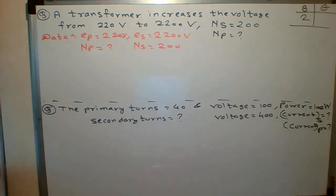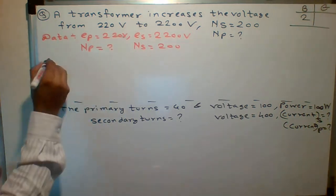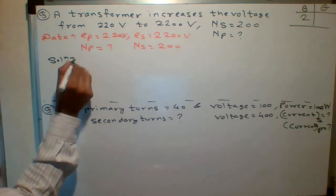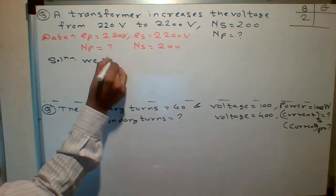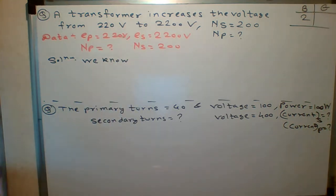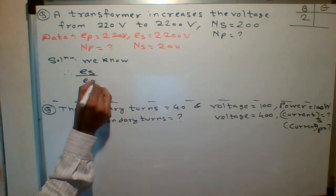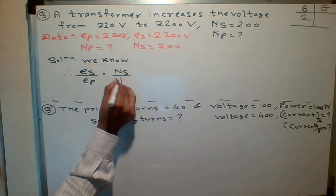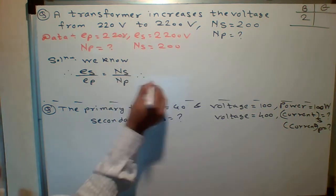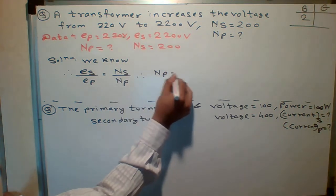Students, that we know the formula. Who will tell me the formula of relation between? We know the relation between primary turn, number of turns and voltages. Who will give us the formula? ES upon EP, will give us what? NS upon NP, if you know. So I will shift NP to the left hand side.